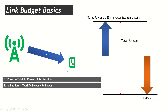Once transmitted, the electromagnetic waves lose power as they travel through the air. They also go through blocking mechanisms like trees, buildings, vehicles, and even people. After all that, the UE receives the signal at a much lower power. The loss that occurs is called the total path loss. So: Rx power at the UE equals total Tx power minus the total path loss.